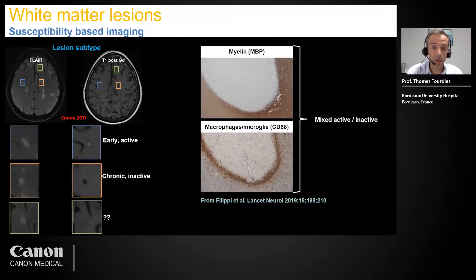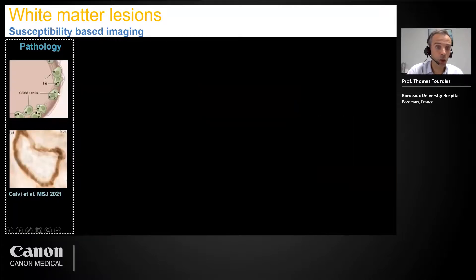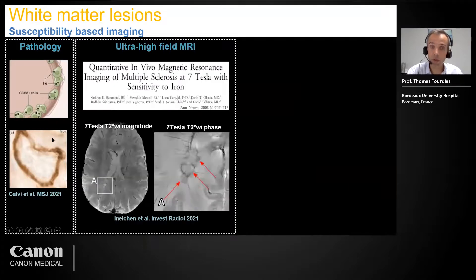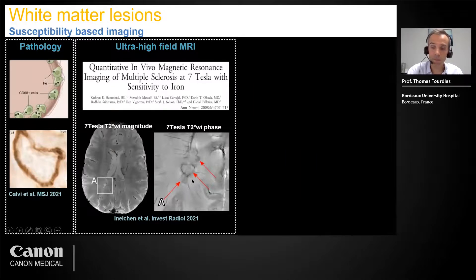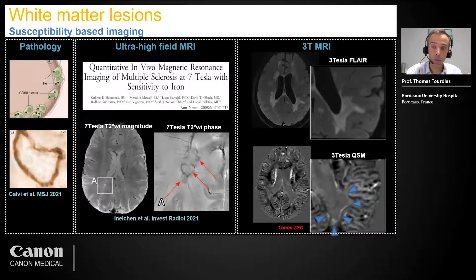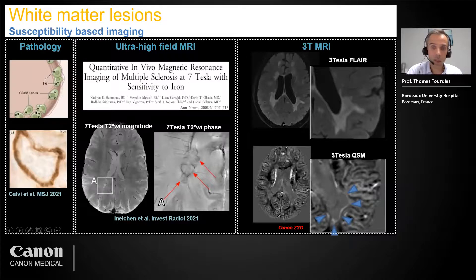First at 7T, it was shown that lesions can have a rim that is hypointense on T2* and even better seen on phase imaging. Now with better 3T magnets, we can run a 3D T2*, post-process susceptibility-weighted images, or QSM, and sometimes see this rim representing the mixed lesion. This is interesting because these subtypes are supposed to be lesions that will expand slowly and evolve toward severe destruction.